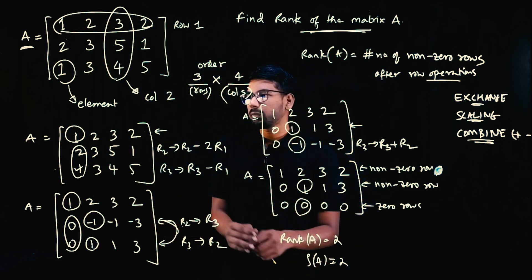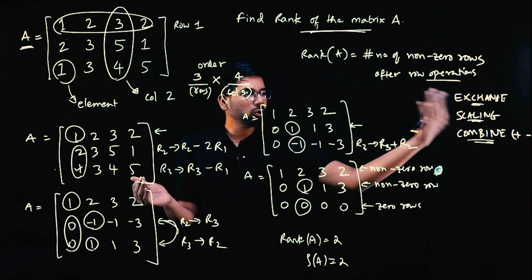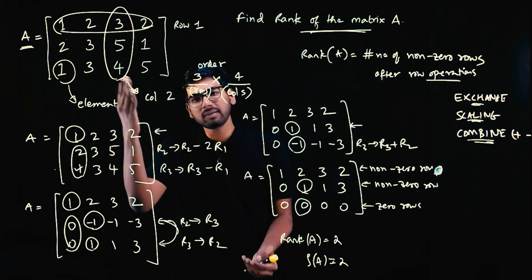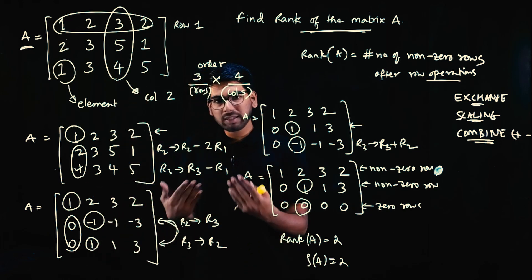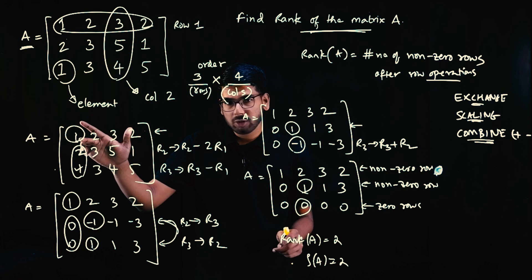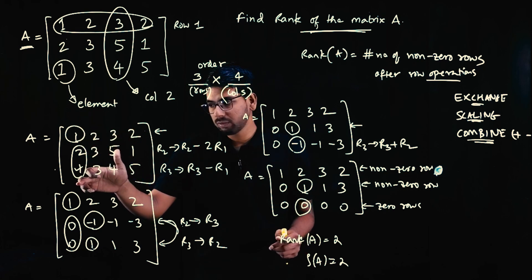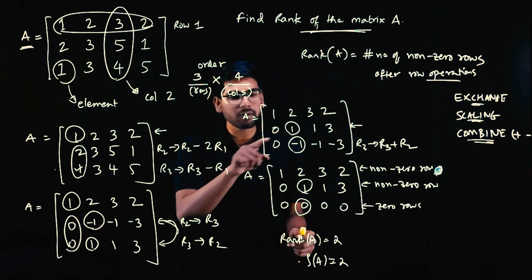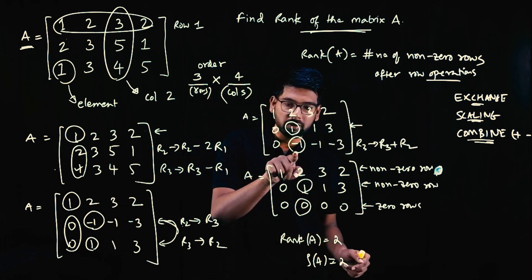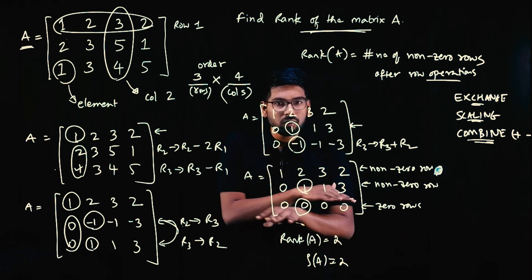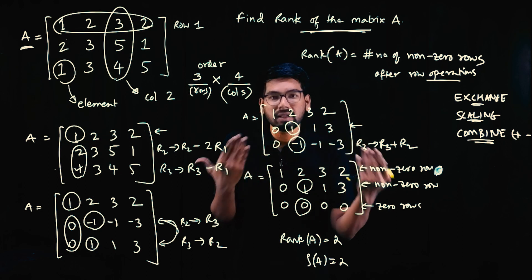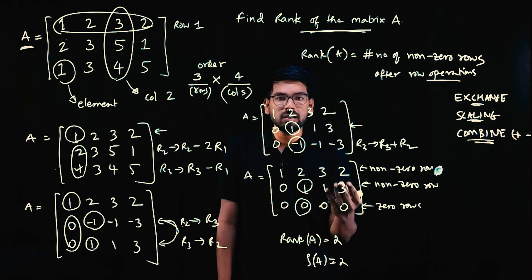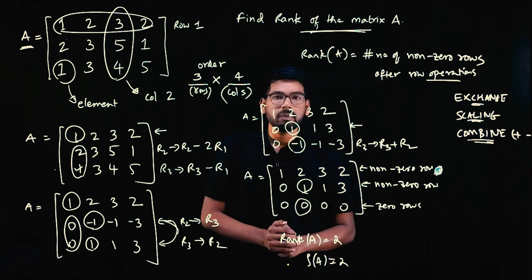To summarize: we do row operations with the purpose of making elements of the given matrix zero. The procedure is: use the first element of the first row (make it 1, zero out below), then second element of second row (make it 1, zero out below). When no more operations are possible, count the non-zero rows — that is the rank of matrix A.